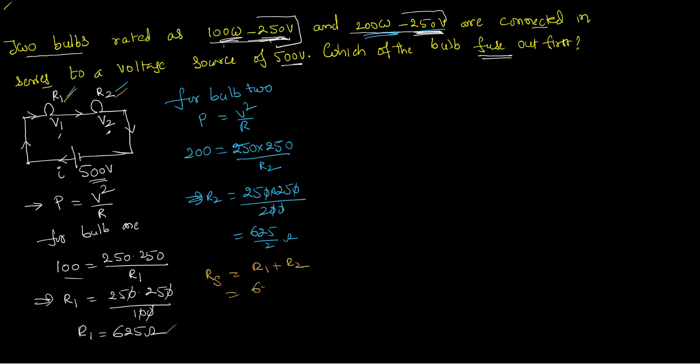R1 is 625. R2 is 625 by 2. That is 625 plus 312.5 and the addition of that gives you the value of 937.5 ohms. Now I know what is the total resistance.